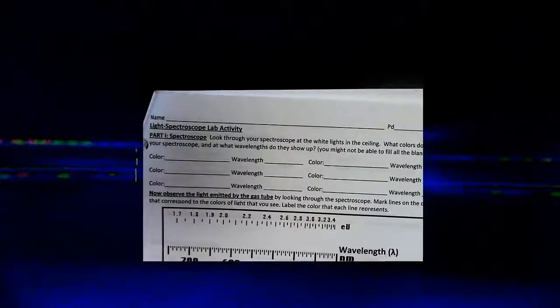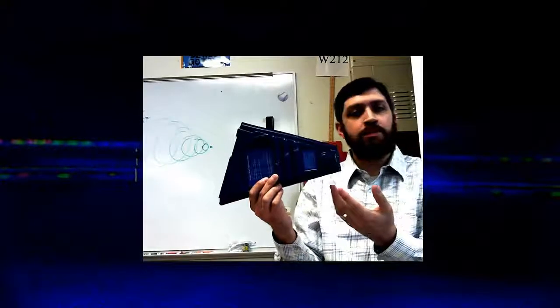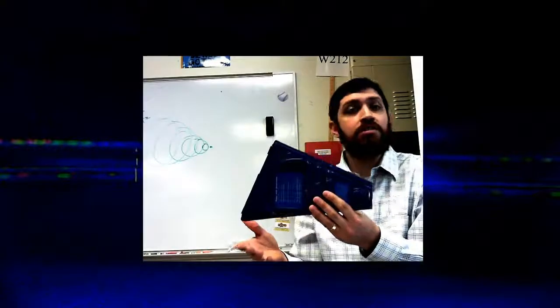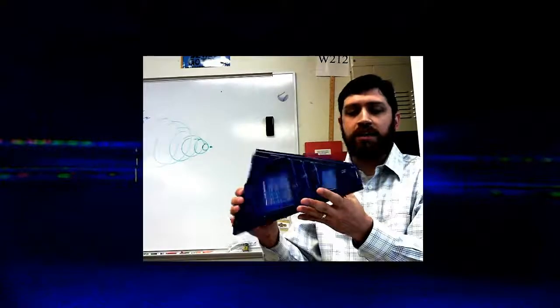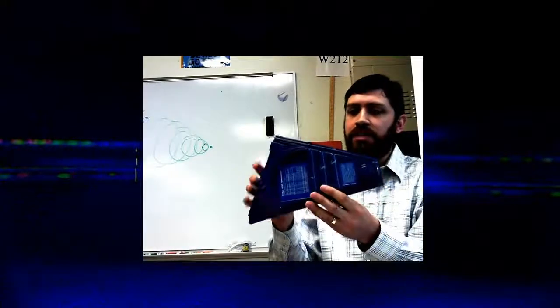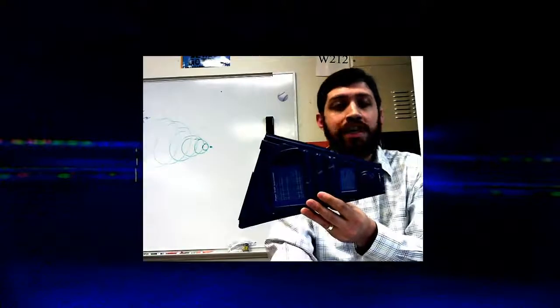To do this activity, we're going to be using a spectroscope, which looks like this. So here's my spectroscope. I know you've used this in chemistry before. Looks kind of like a triangle. There's an eyepiece on this end, and this end is where the light comes in.